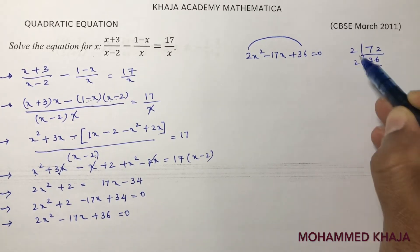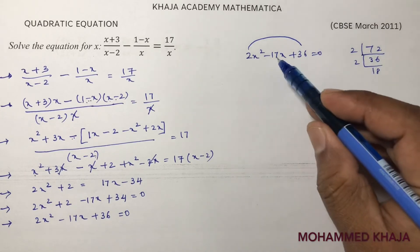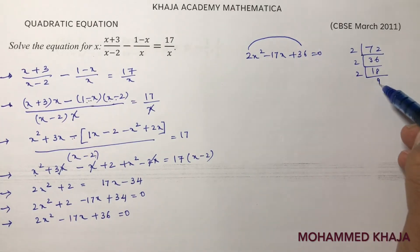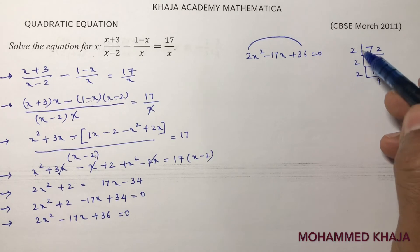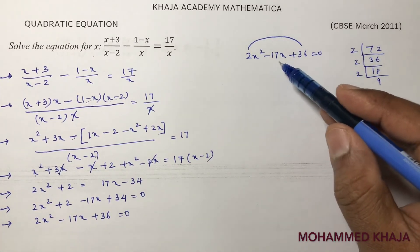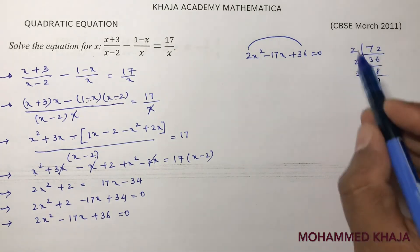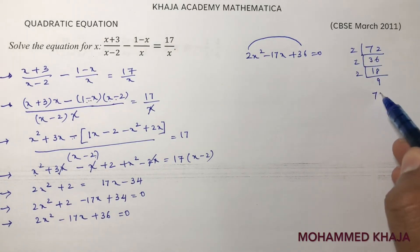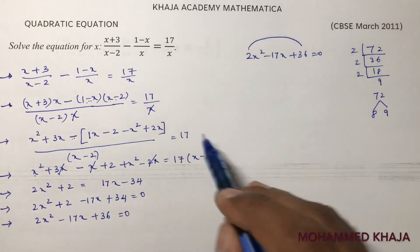2 times 18 - see this is 4, 4 times 18 is not possible. Next 2 times 9 - see this 3 times you will multiply like 2 times 2 is 4, 4 times 2 is 8, 8 times 9 is 72. So with 8 and 9, 8 and 9 you will get 17.